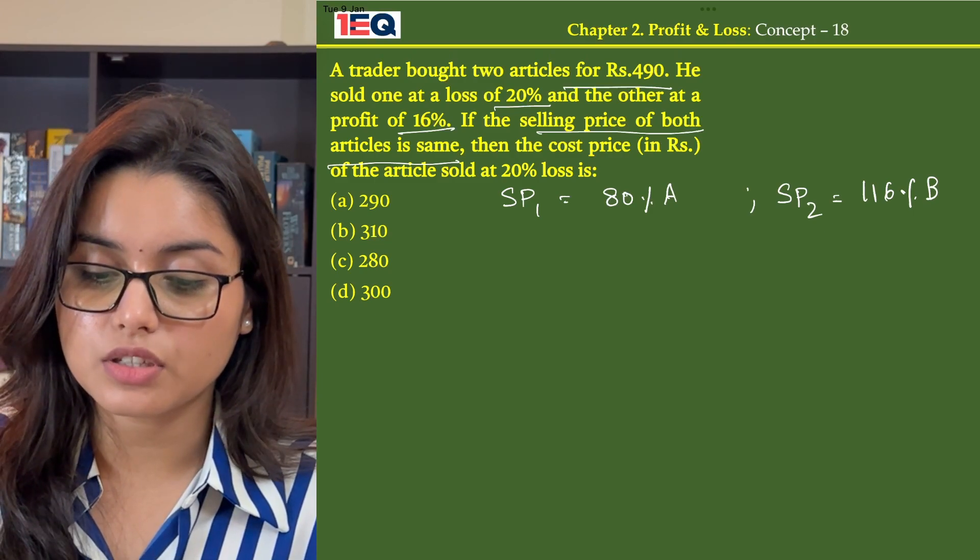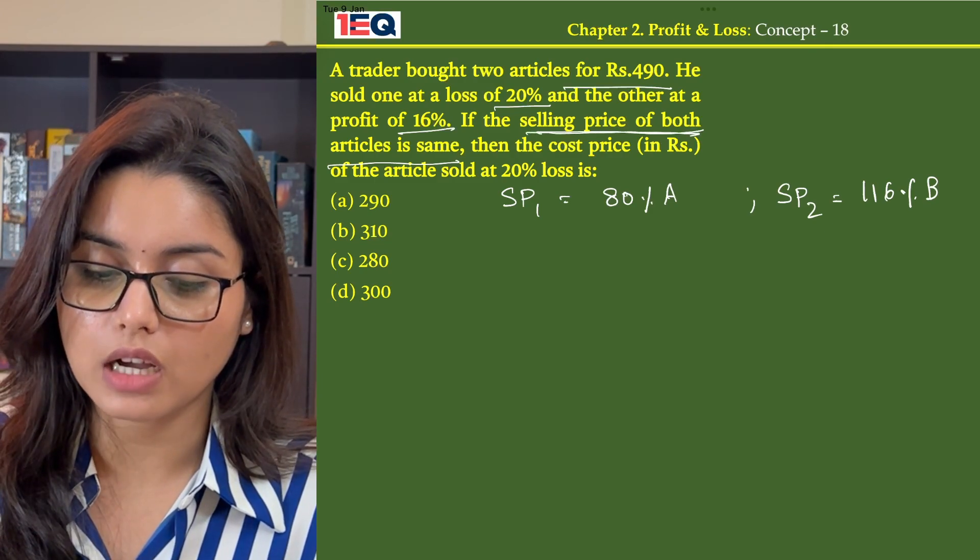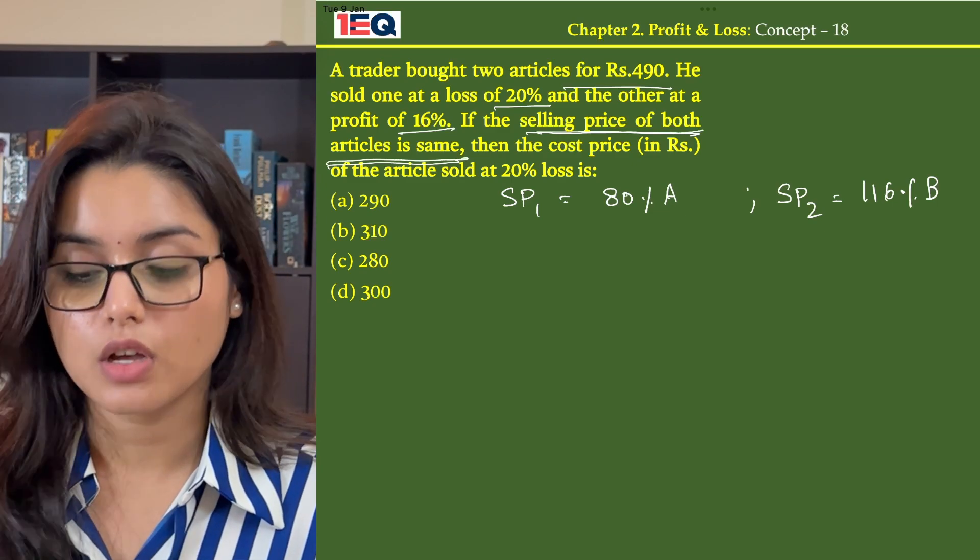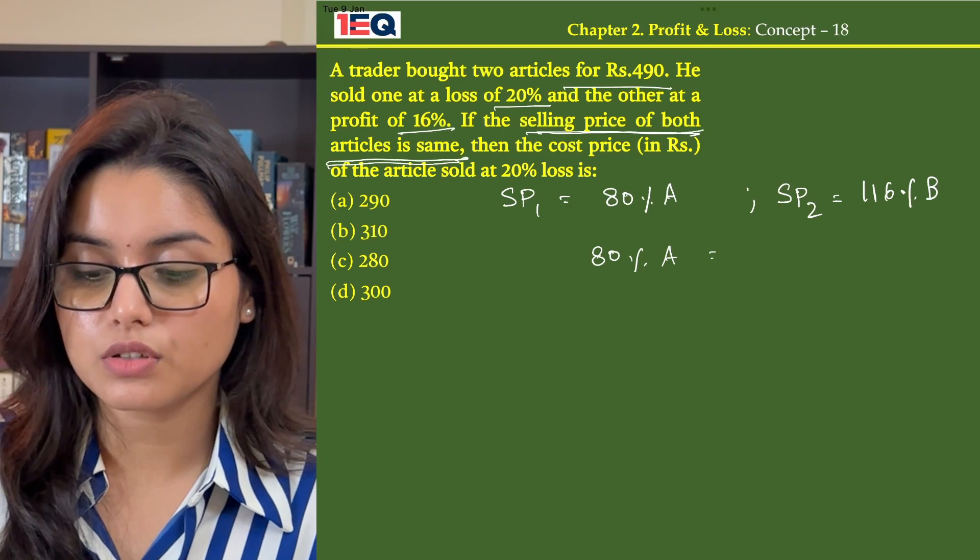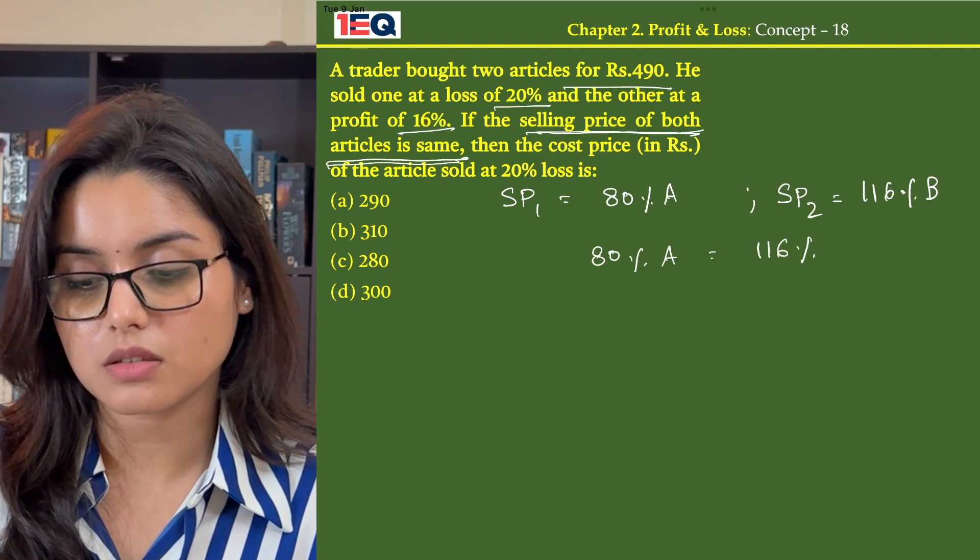Now as given in the question, the selling price of both articles is same. That means 80% A is equal to 116% B.